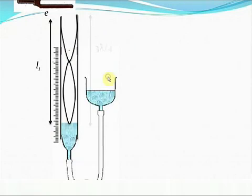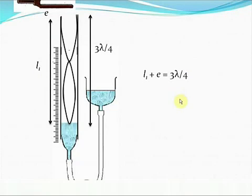Now, this length is clearly 3 lambda by 4. And, as in the previous case, l1, the new reading of the air column, plus e is equal to 3 lambda by 4. By using the formulae l plus e equal to lambda by 4 and l1 plus e equal to 3 lambda by 4, the values of e and lambda can be obtained.